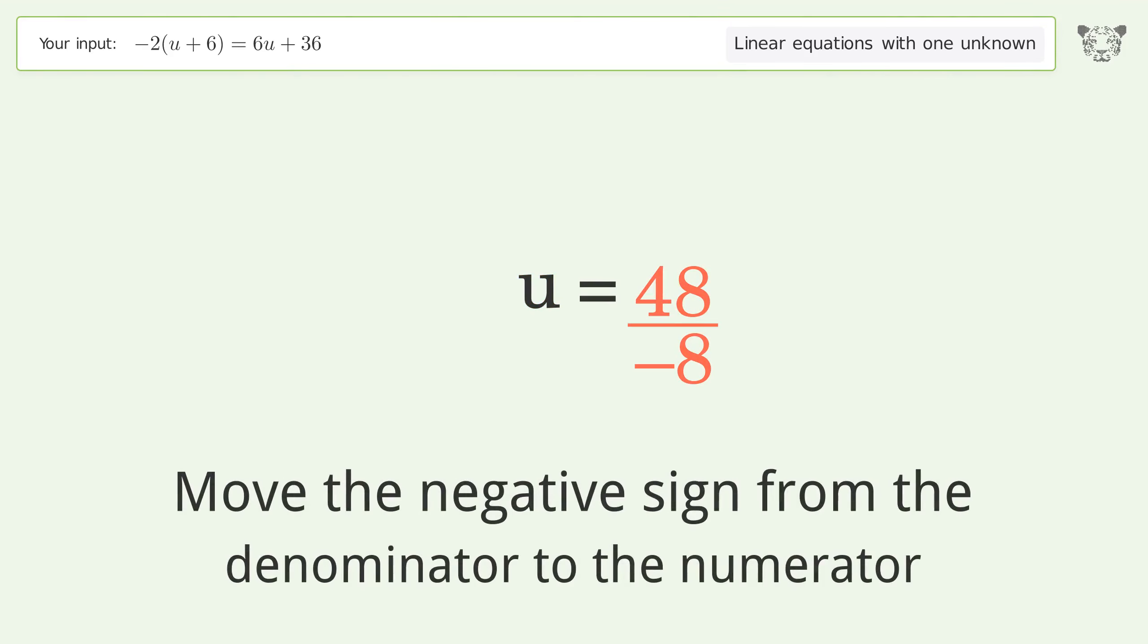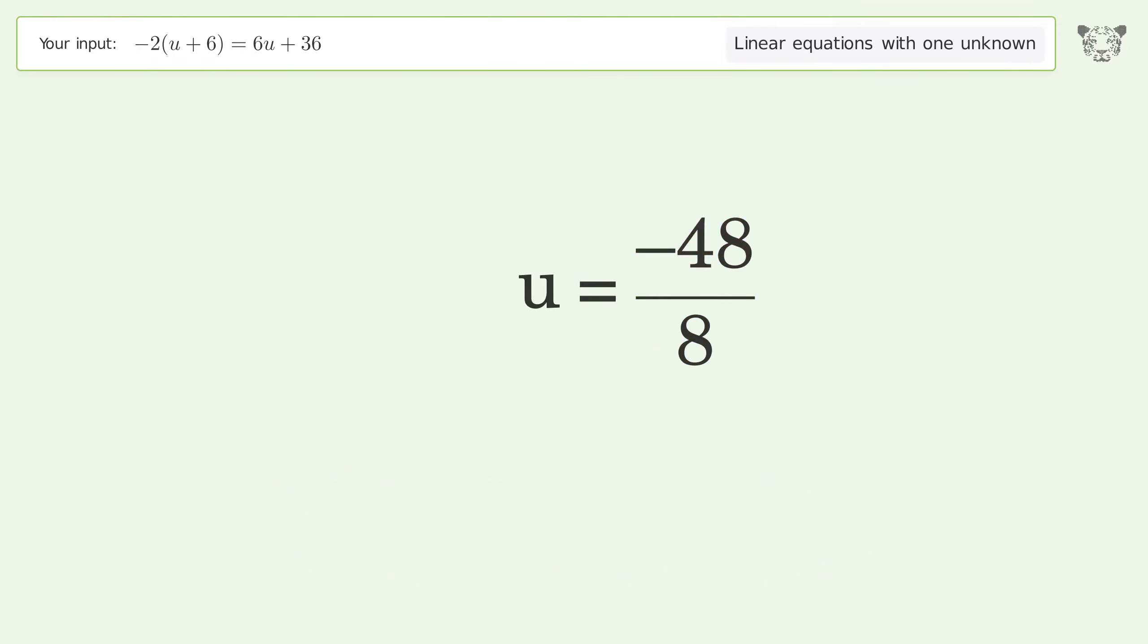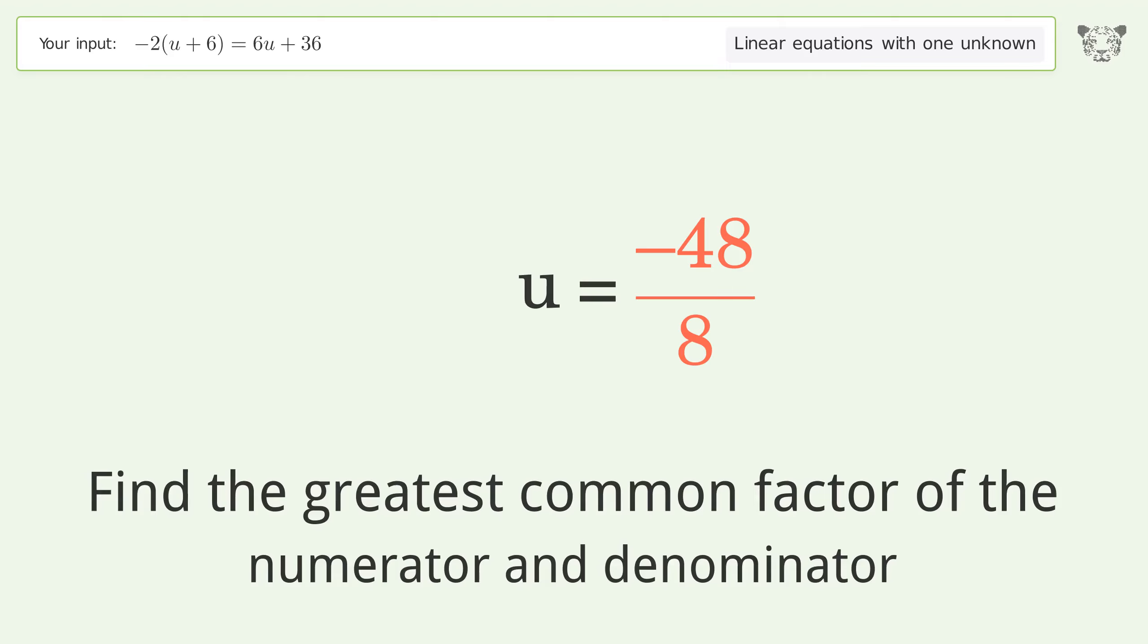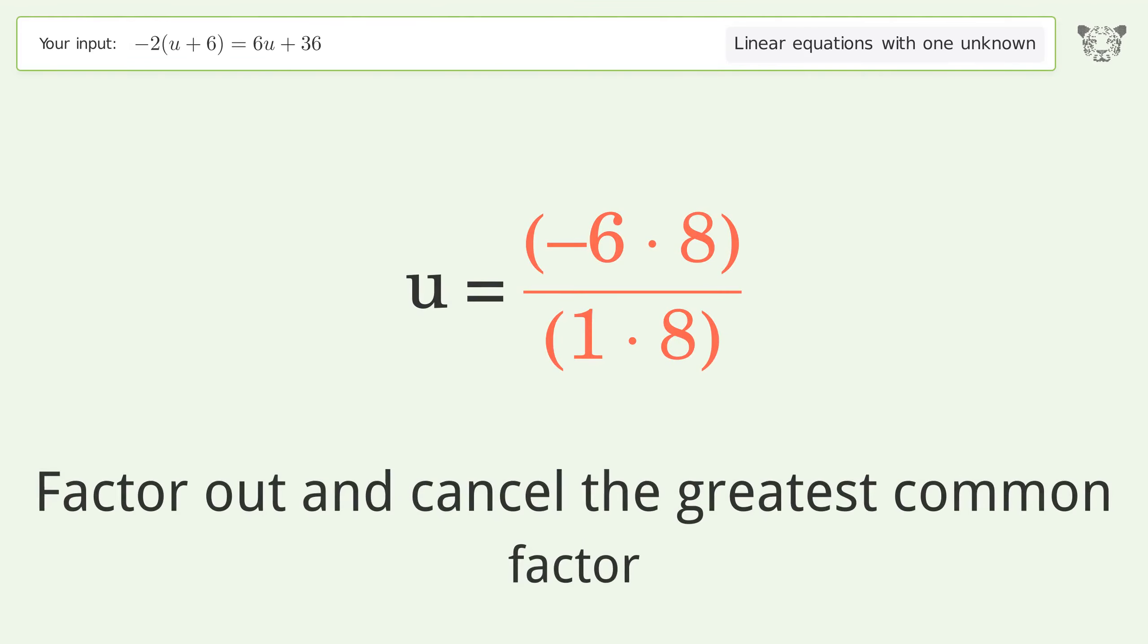Move the negative sign from the denominator to the numerator. Find the greatest common factor of the numerator and denominator. Factor out and cancel the greatest common factor.